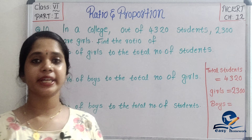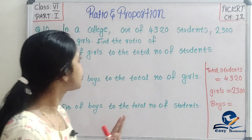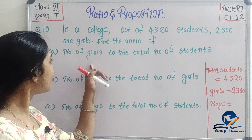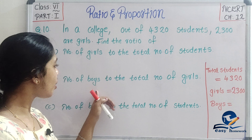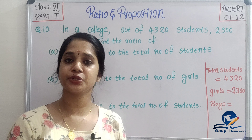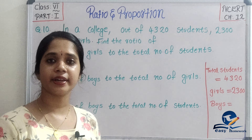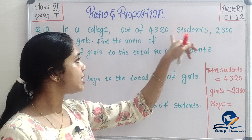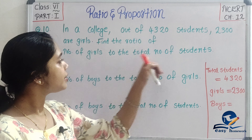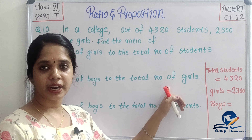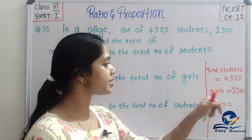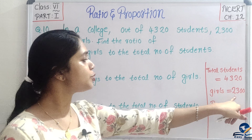We are going to discuss question number 10. In a college, out of 4,320 students, 2,300 are girls. Find the ratio of: number of girls to total number of students; number of boys to total number of girls; number of boys to total number of students. Total students = 4,320; girls = 2,300.